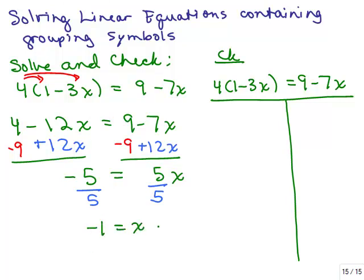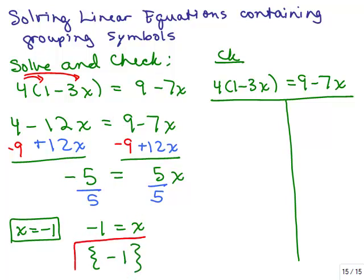Basically that's saying x is negative 1, which is the way we usually like to write it. So the solution set is negative 1. Now we want to make sure that's correct, so we plug in negative 1 everywhere we see x in the original equation and use the order of operations to simplify.